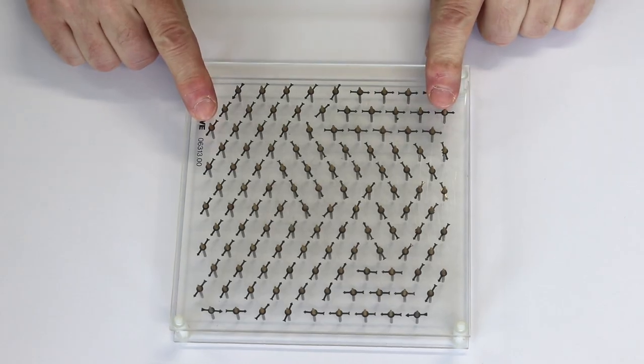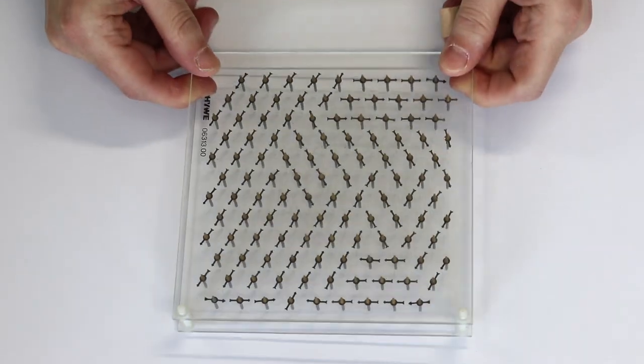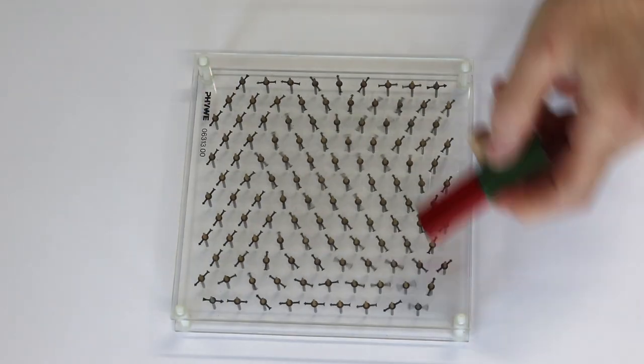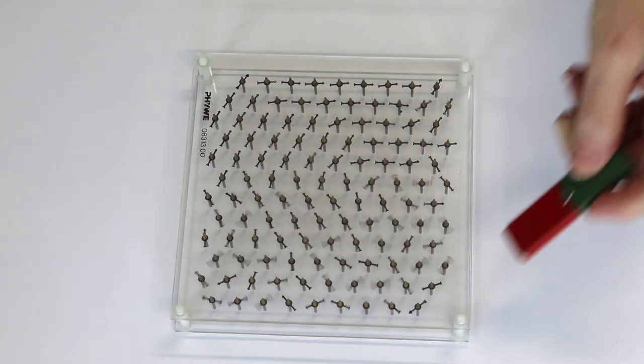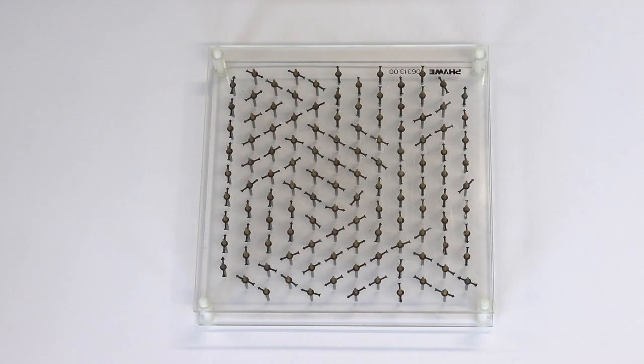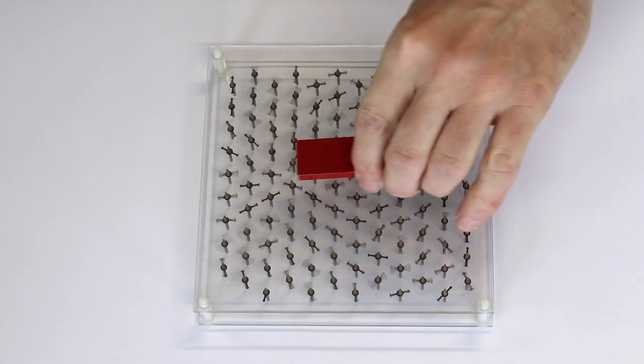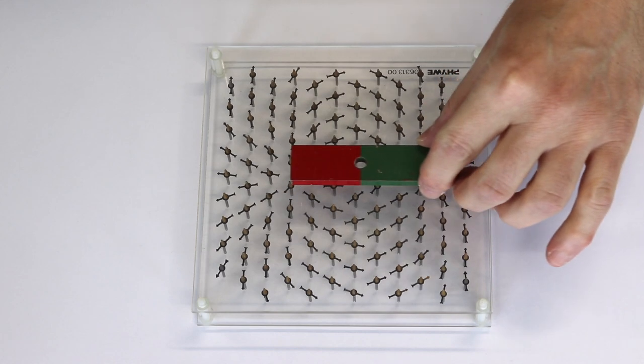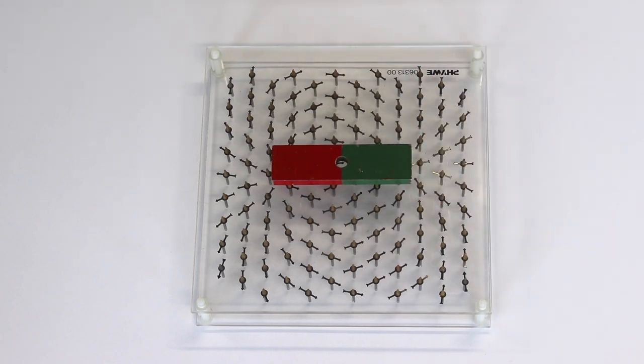I have here an array of compass needles and they can move when a magnet is nearby. Of course they interact with each other a little bit, but let's now bring a permanent magnet and that is the field pattern.